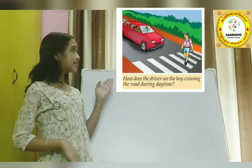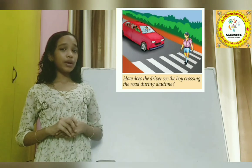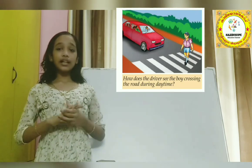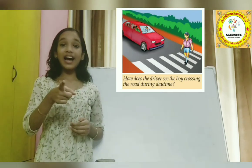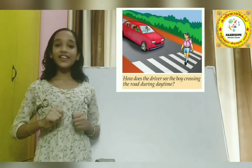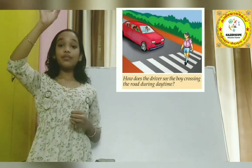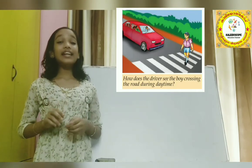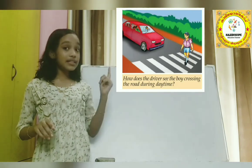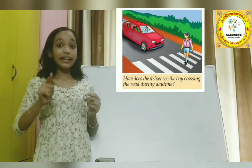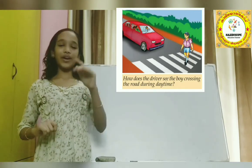Can you say how did the driver see the boy crossing the road in the daytime? Very good! The light falling on the boy is reflected into the driver's eyes. Then the driver can see the boy.